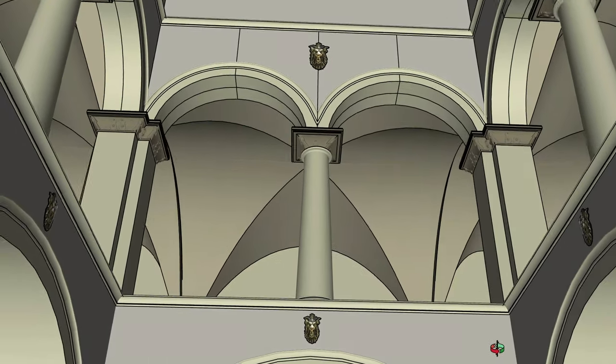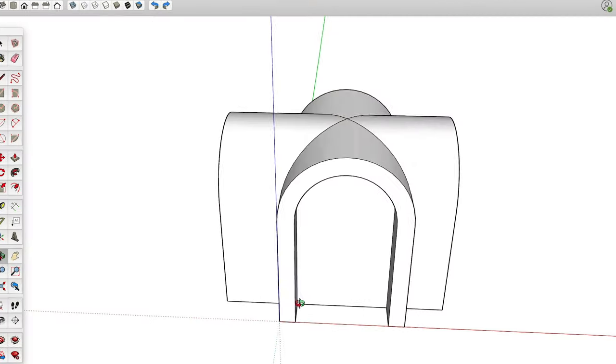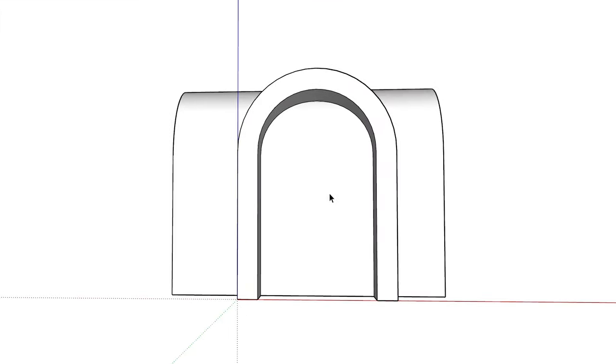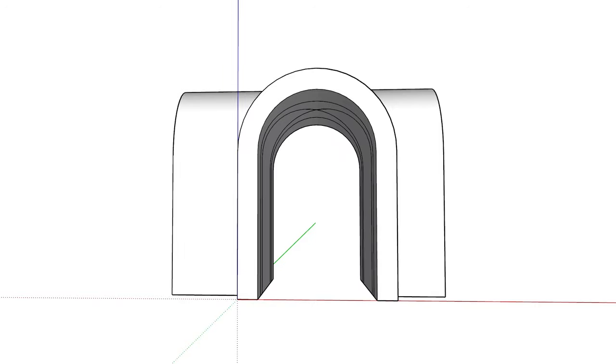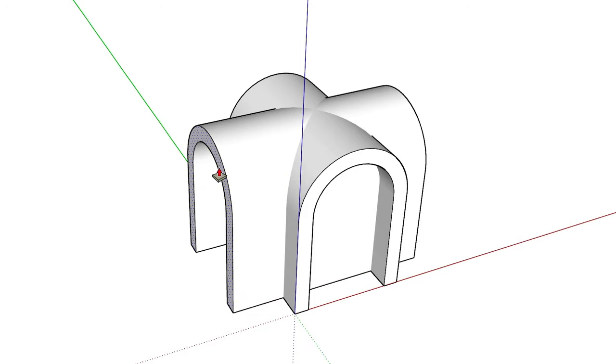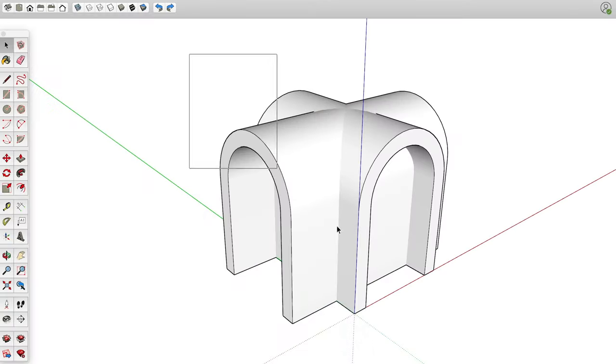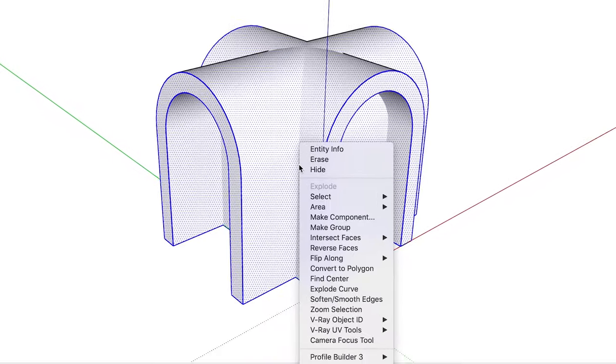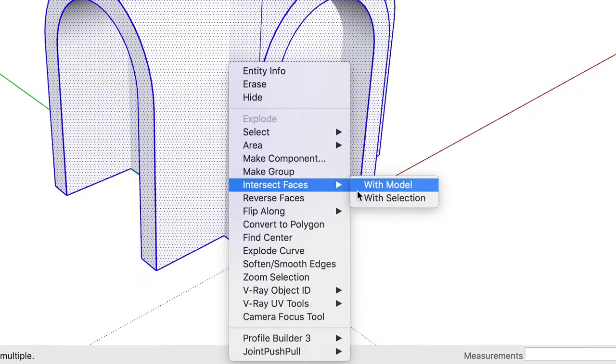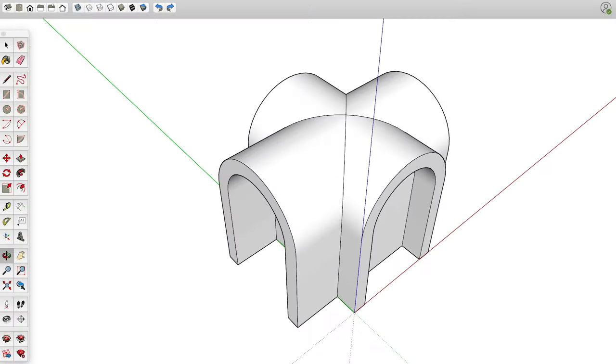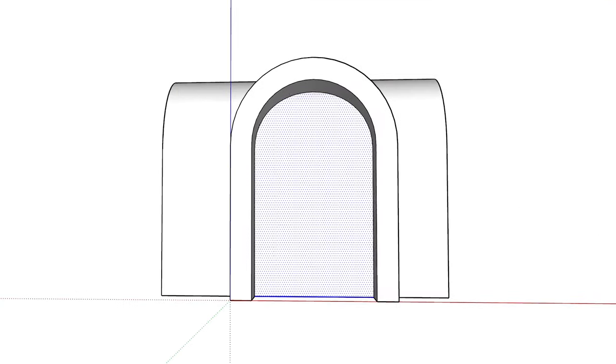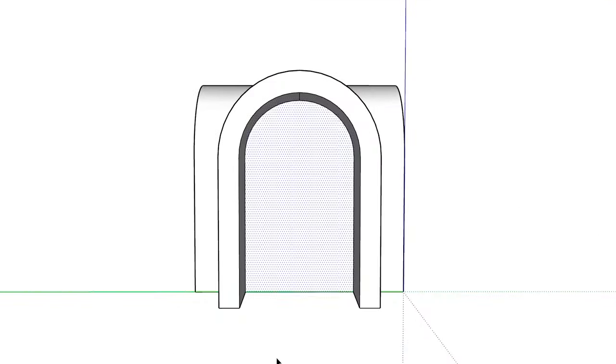The problem is that if you just overlap things, SketchUp doesn't automatically connect the polygons into one mesh you can edit into what you need. Fortunately, SketchUp's intersect faces feature has you covered. You can select one or more faces, right click, and select intersect faces with model. And SketchUp will add edges at all of the intersections. This leaves you with geometry you can more easily edit to get what you need.